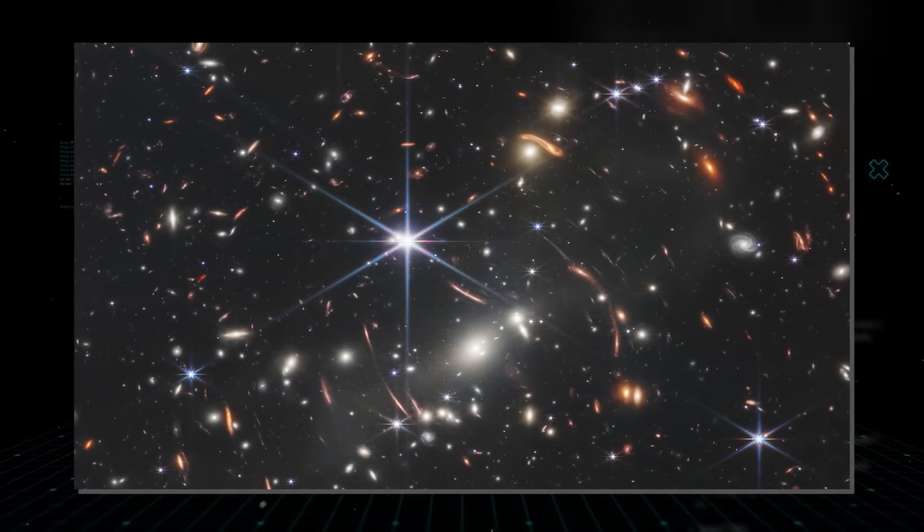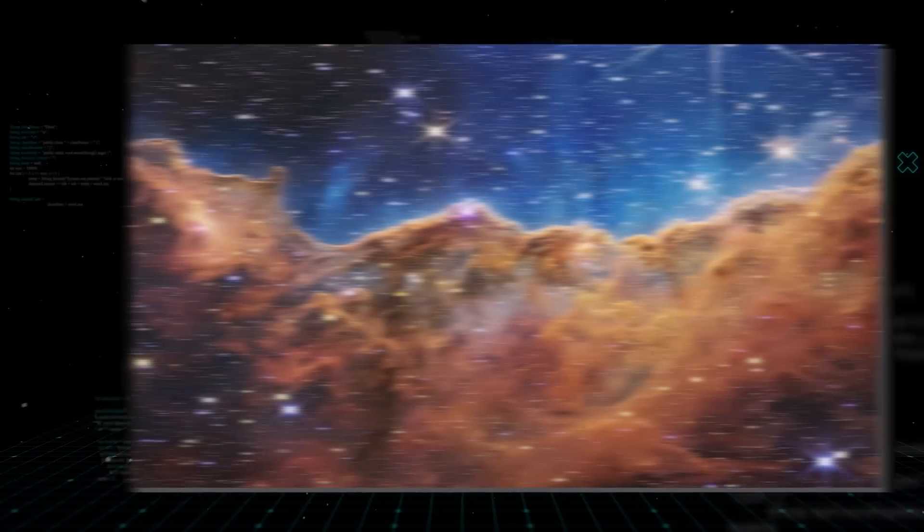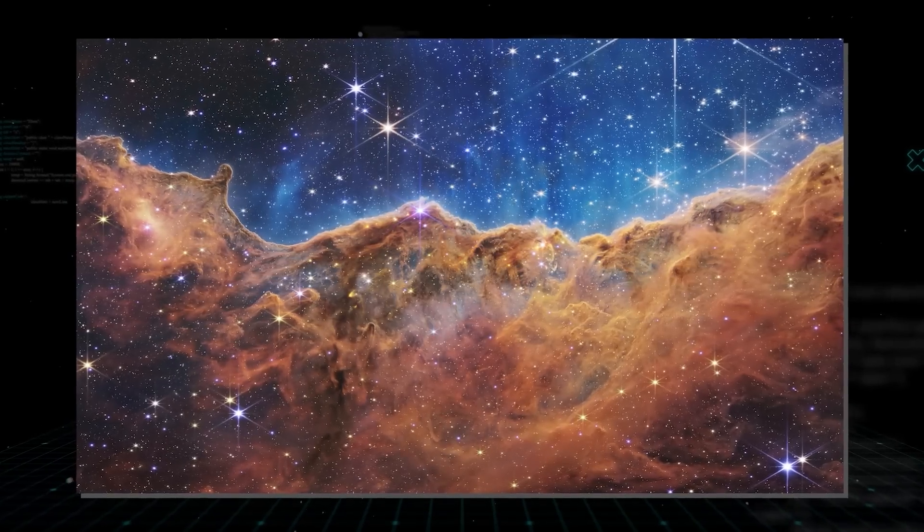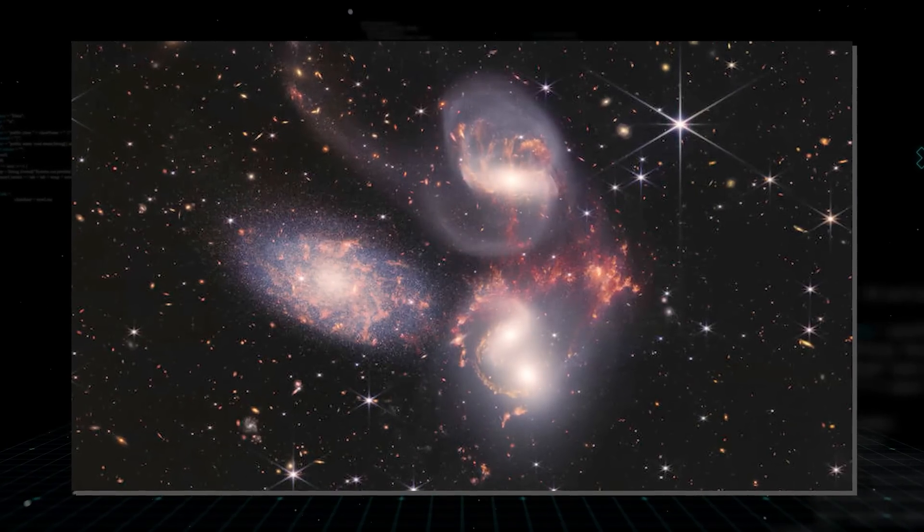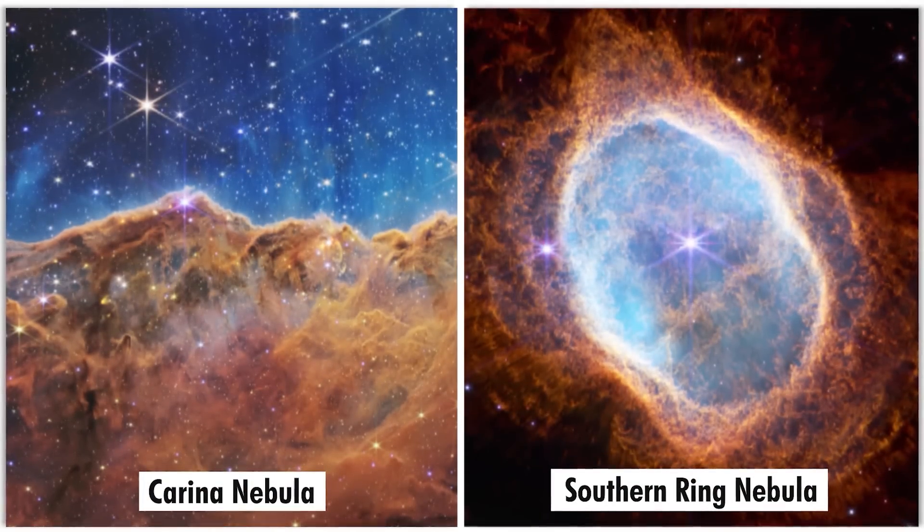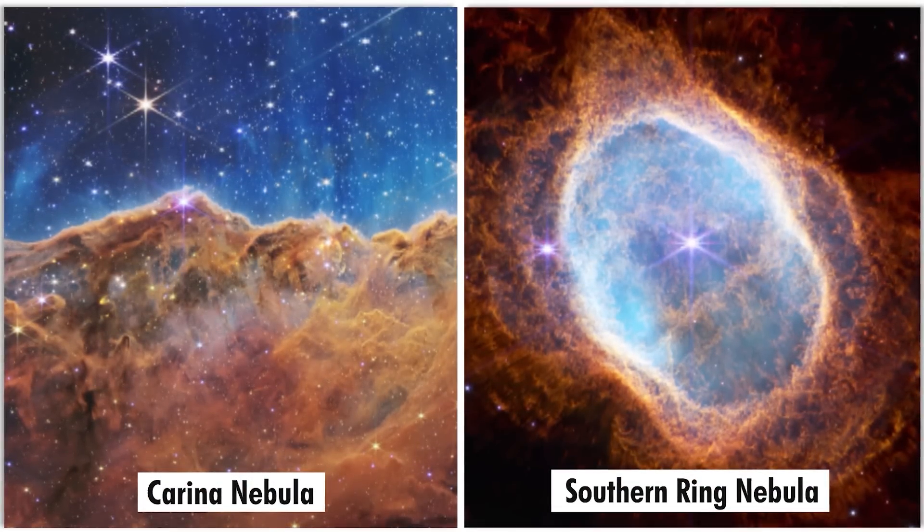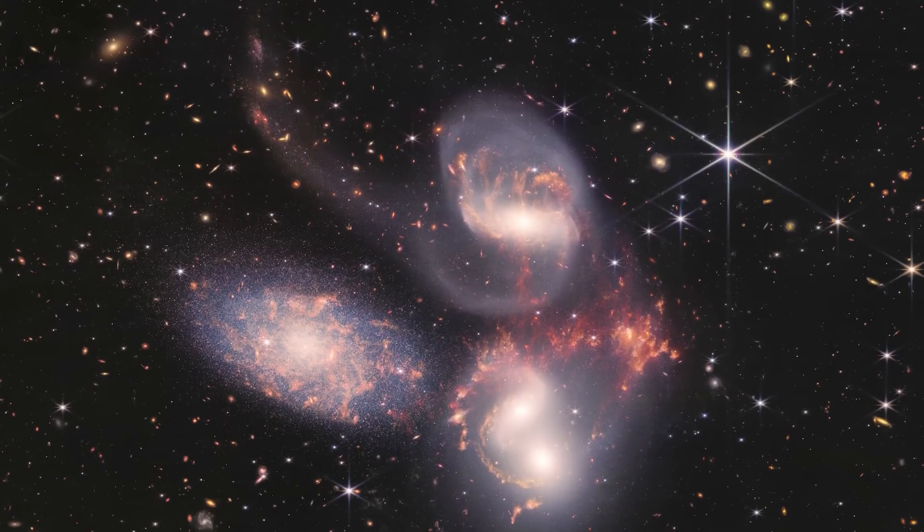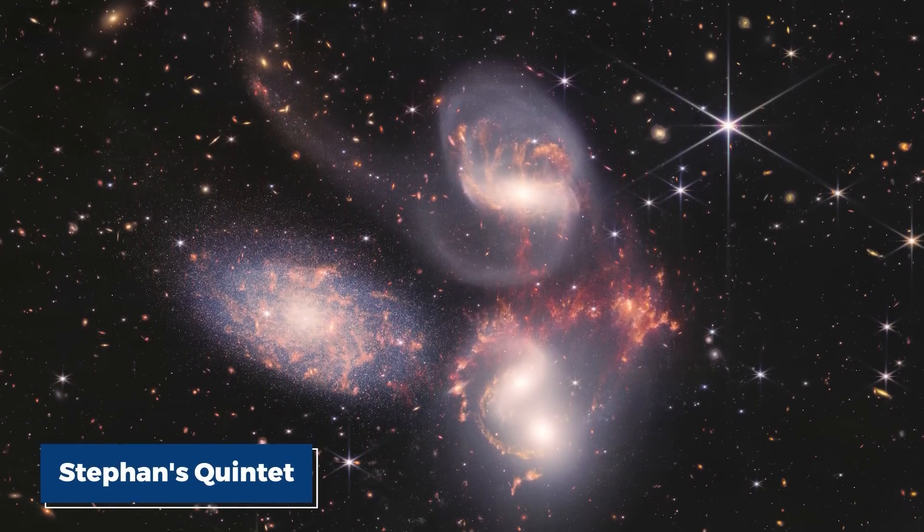The very first scientific images from James Webb that were released in July captured the very essence of some of the most unexplored parts of distant galaxies. Some of the main images included more detailed shots of the Carina Nebula, the Southern Ring Nebula, as well as an older group of galaxies called Stefan's Quintet.